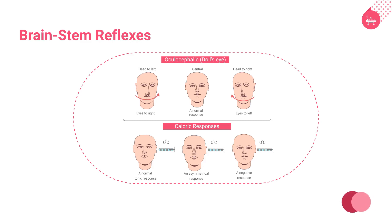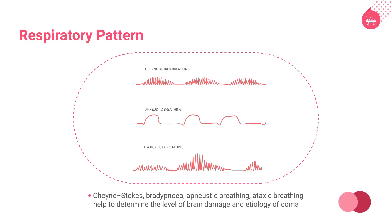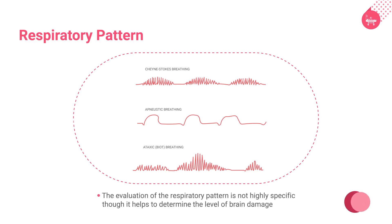In mechanically ventilated patients, tracheal suctioning helps to test the cough reflex. The evaluation of the respiratory pattern is not highly specific, though it helps to determine the level of brain damage. Coma results from a diffuse interference with the arousal system or localized interference with one or more strategic sites.